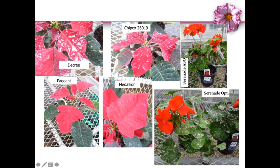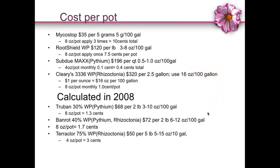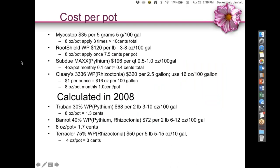Another issue is residue. Decree has a residue, iprodione has a residue. I really like Pageant and Medallion — particularly with the capsule formulation — because you don't get that residue. Serenade ASO was fantastic for not having residue, but did not control Botrytis as well as Serenade Opti in other trials. However, Serenade Opti made it look like a cat threw up on the plant, so that's obviously not acceptable for cut flower production. But using it earlier in the season and switching over could give you the results you want.